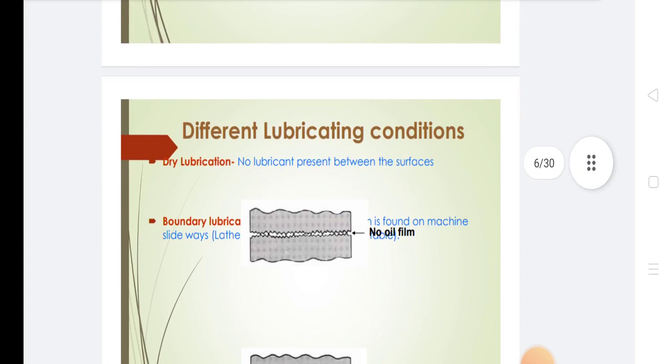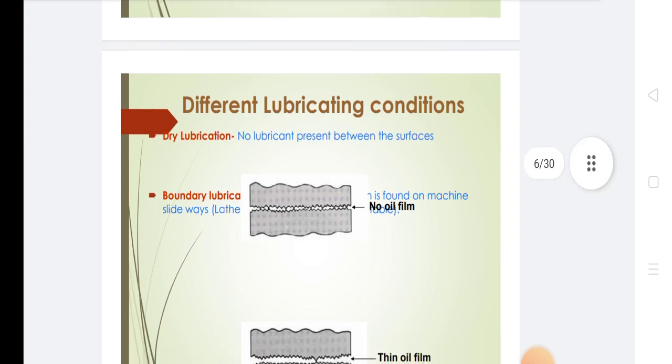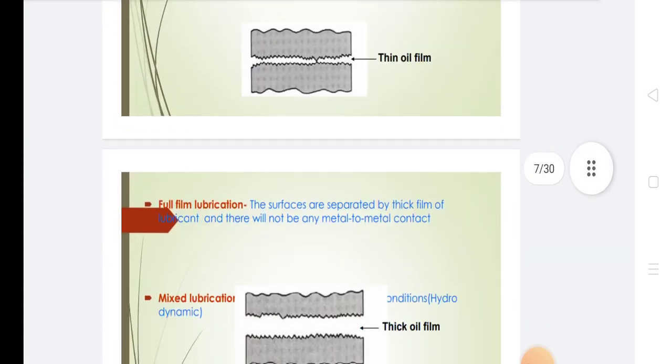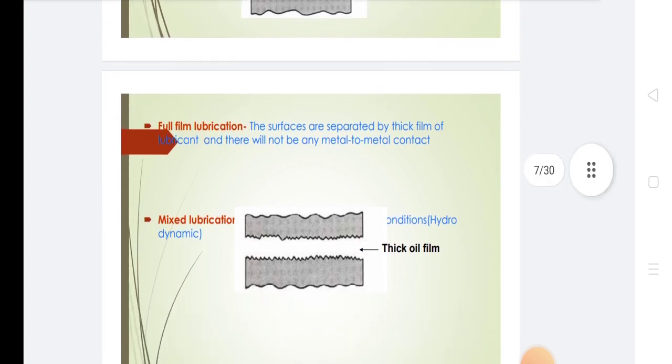There are different lubricating conditions. Dry lubrication: no lubricant present between the surfaces. Boundary lubrication. Full film lubrication: the surfaces are separated by a thick film of lubricant and there will not be any metal-to-metal contact. Mixed lubrication.